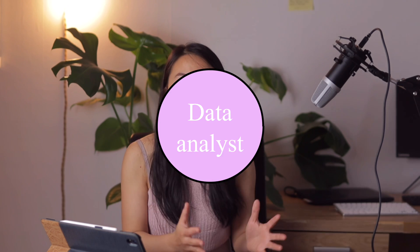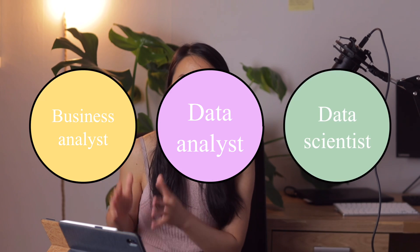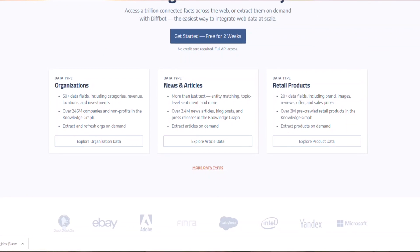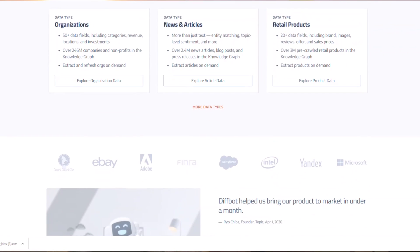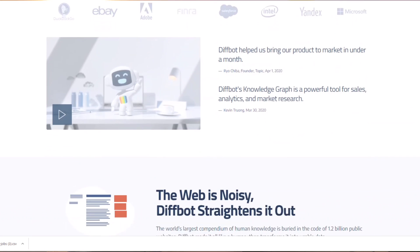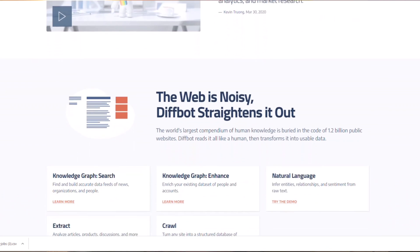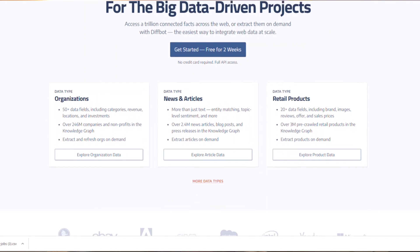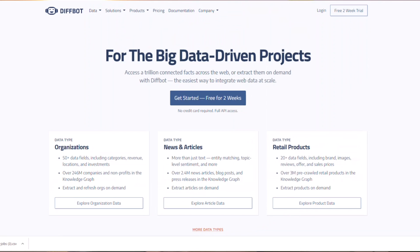So I came across DivBot. DivBot is a very fast and convenient tool that allows you to extract a trillion connected facts across the internet. To start using DivBot you just need to sign up for a 14-day free trial. They don't require a credit card so it's quite nice.